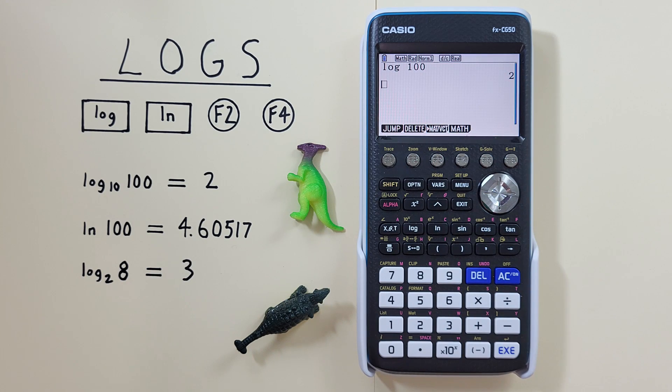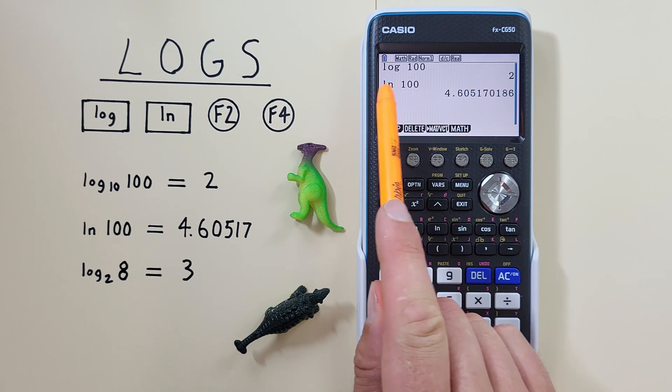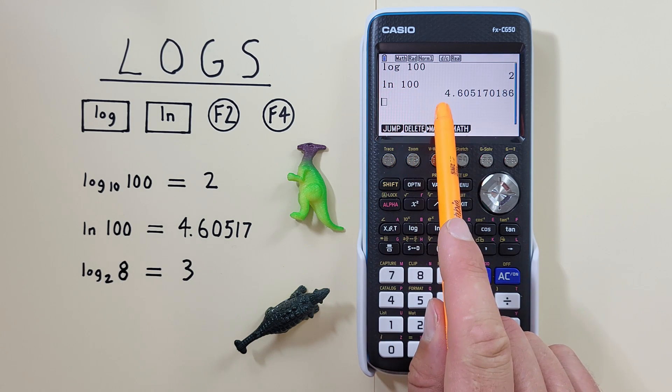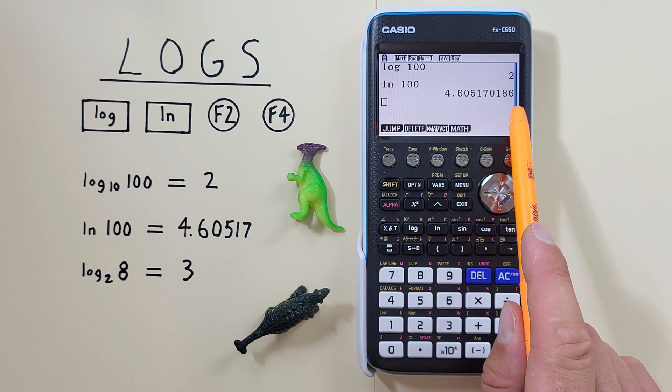For ln or natural log, we use the ln key. So if we want to find for example the natural log of 100, we hit the ln key and then enter the 100 and hit exe and we see we get the natural log of 100 is equal to 4.60517 etc.